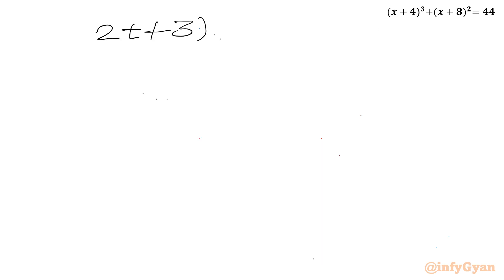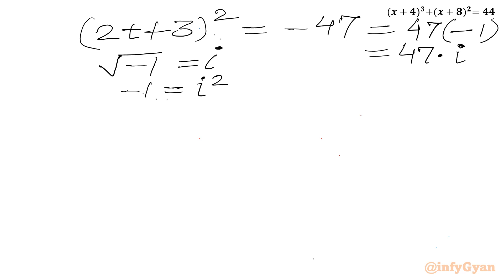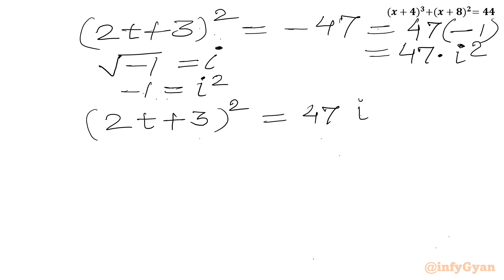Now we know that the square root of −1 is i (a complex number) and −1 = i². So we can write −47 = 47i², giving (2t + 3)² = 47i². Taking square roots of both sides, 2t + 3 = ±i√47.